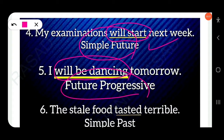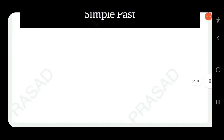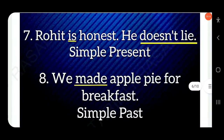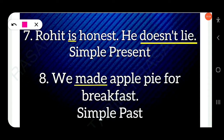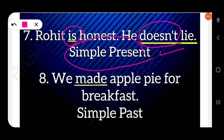Next sentence: 'The stolen food tasted terrible' — 'tasted' is V2, that means simple past. Then: 'Rohit is honest, he doesn't lie' — both verbs 'is' and 'does not lie' are simple present. Next: 'We made apple pie for breakfast' — 'made' is simple past.